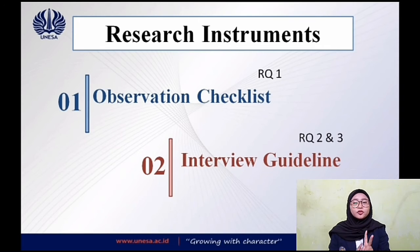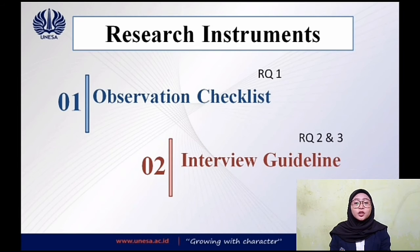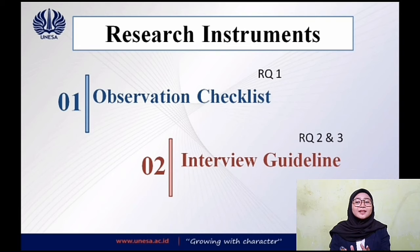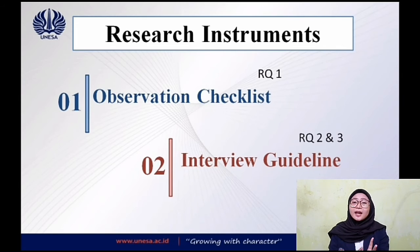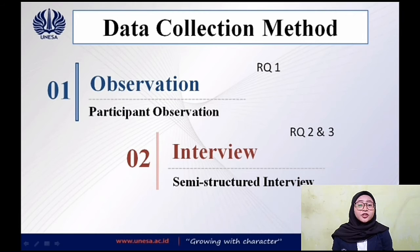The next point is research instruments. I applied two instruments: observation checklist and interview guideline. The observation checklist will be used while observing the classroom situation. Information will be gained from the steps of teaching English using Zoom, and I will give a checklist in the observation sheet indicating whether the process is going well or not. This can answer the first research question. The interview guideline provides a list of questions prepared before the interview session to keep it organized, allowing me to ask questions by following the guideline. It can answer the second and third research questions.